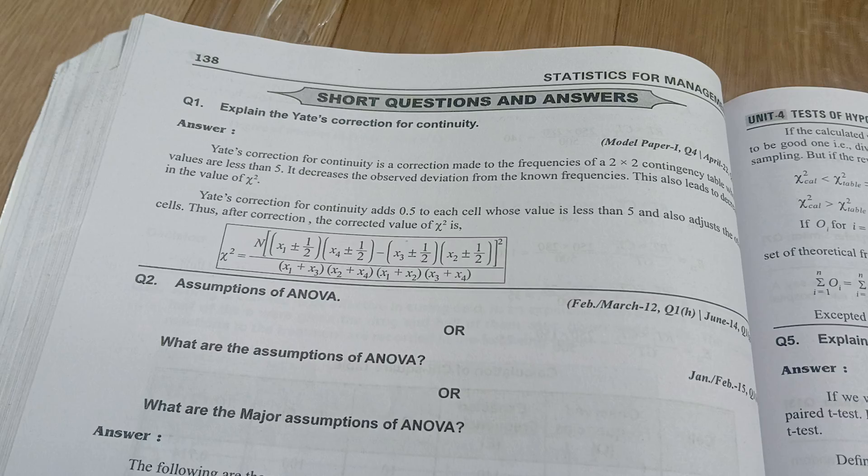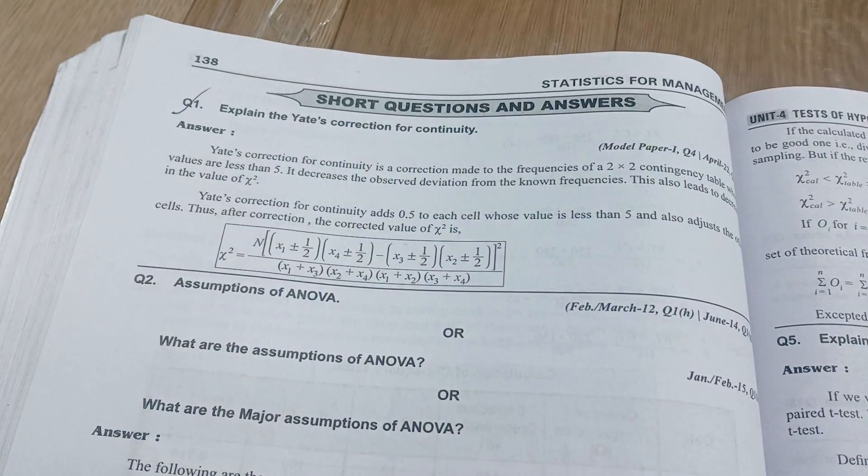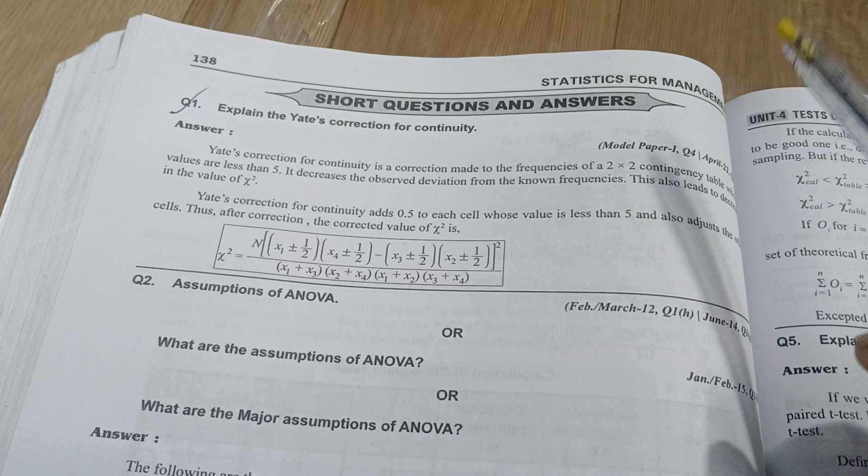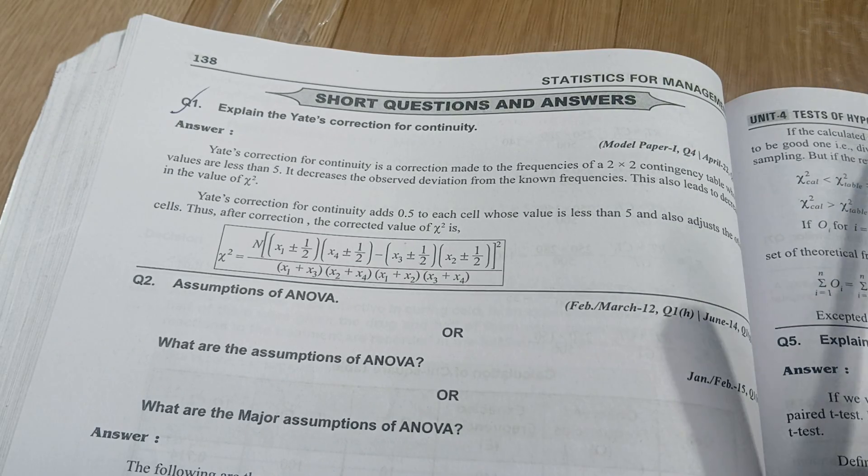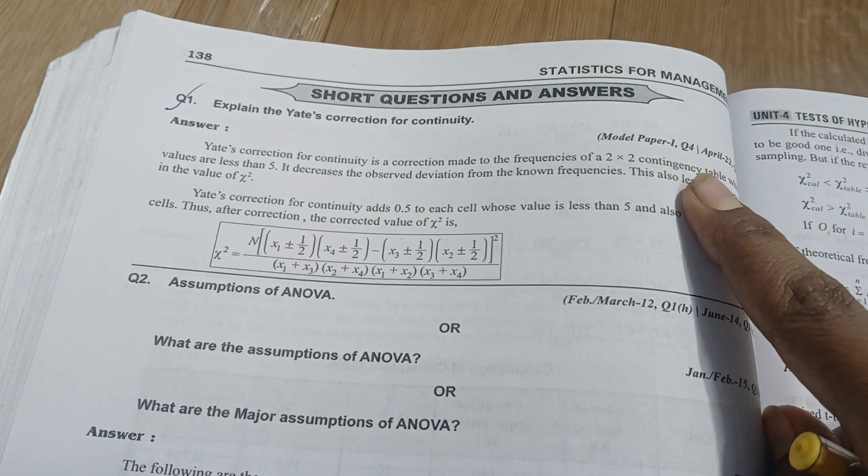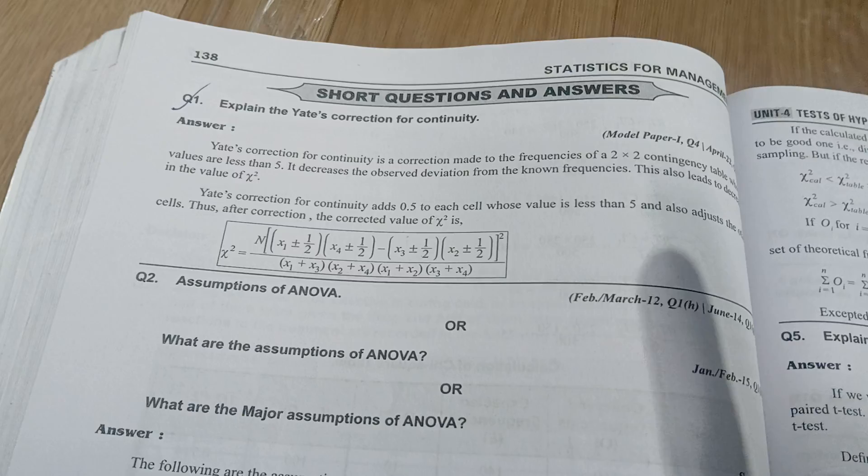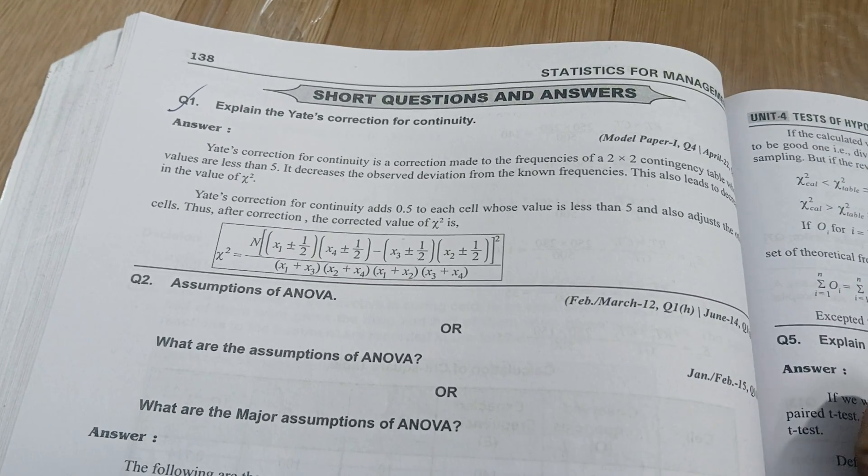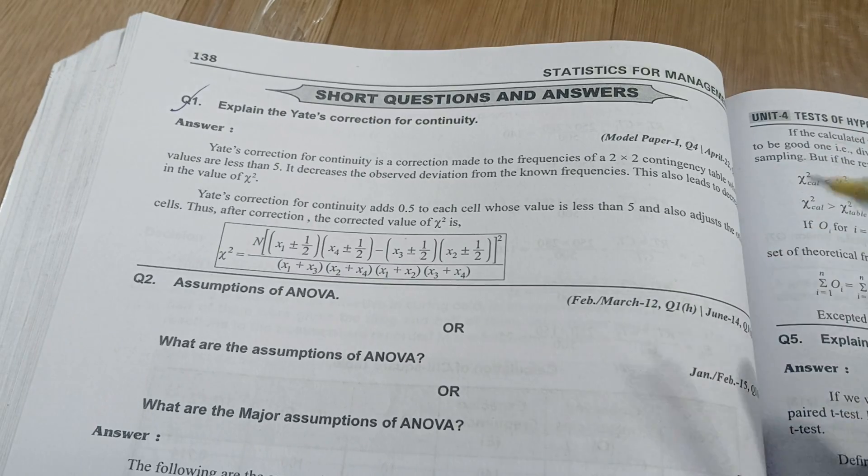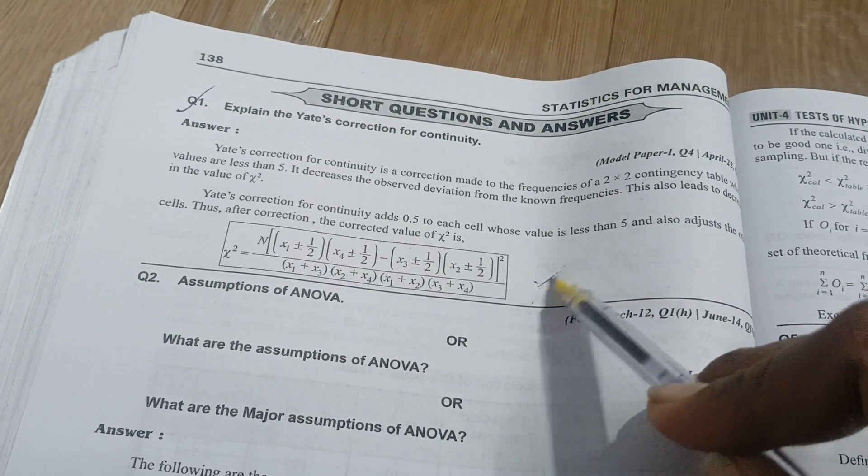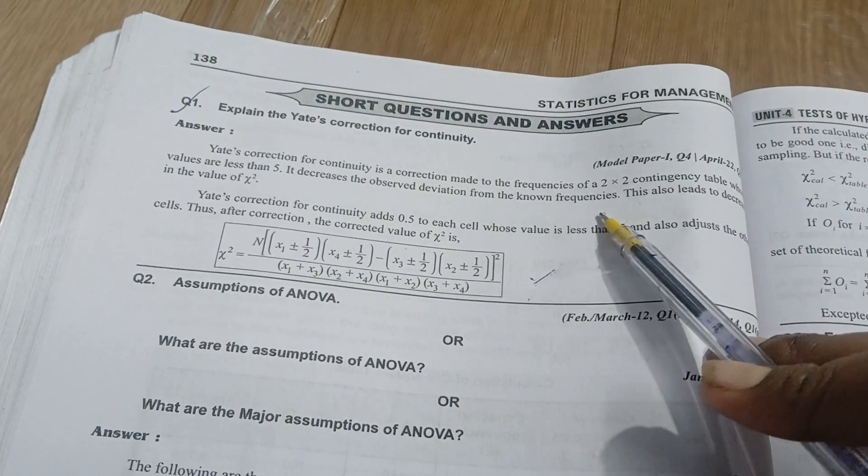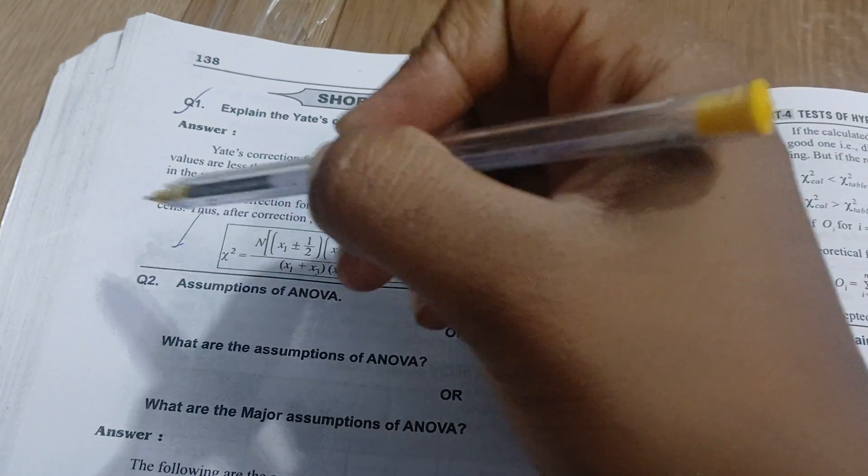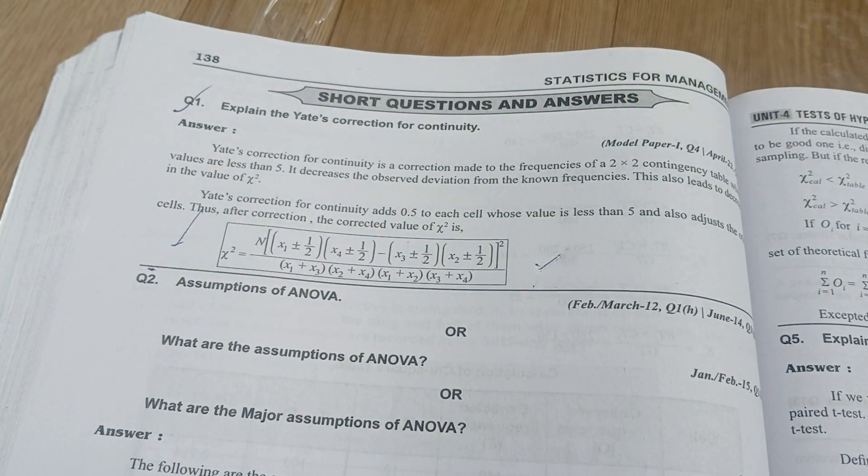The first important question is Yates's correction of continuity. This is used for 2x2 contingency tables where the values are less than 5. You should remember this formula. While it's not extremely important, if you write this formula in your answer, it will be enough for the two marks.